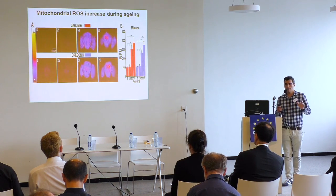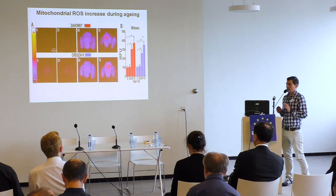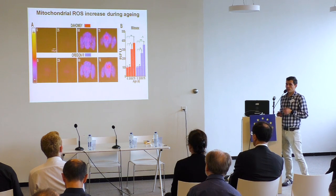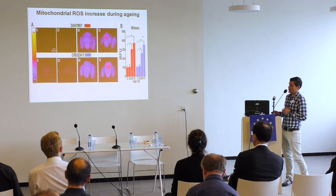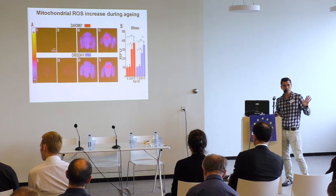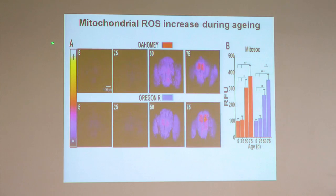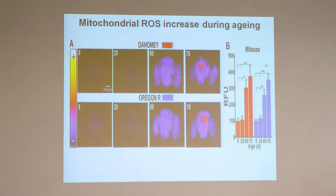Something common across model organisms is that when we get old, our mitochondria produce more free radicals. This is the brain of two different wild-type fly species with no mutations. When the flies are 50 days old — roughly equivalent to 50 years in humans — they start to produce more reactive oxygen species. This is once again in agreement with the mitochondrial free radical theory of aging: more ROS leads to shorter lifespan because ROS damage the mitochondria.